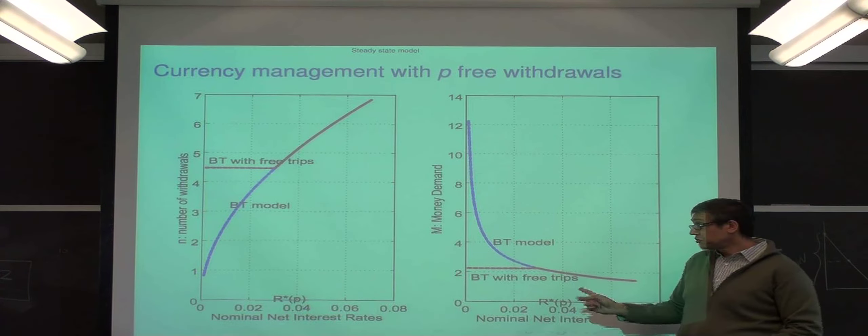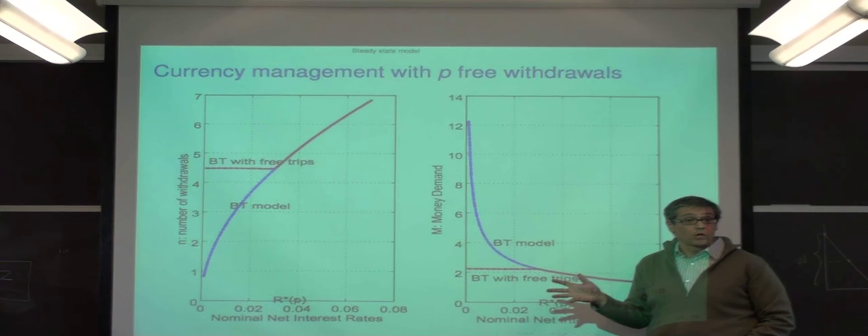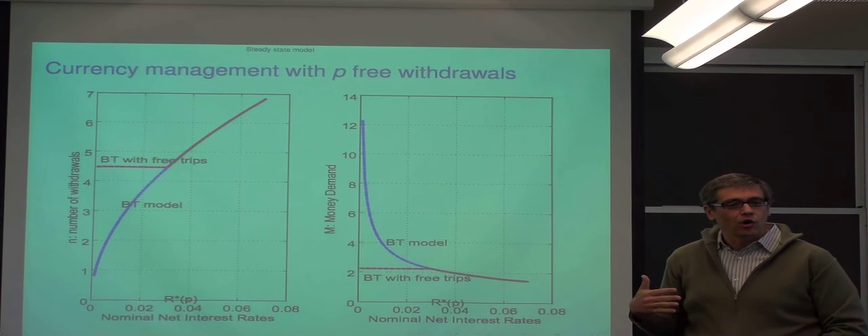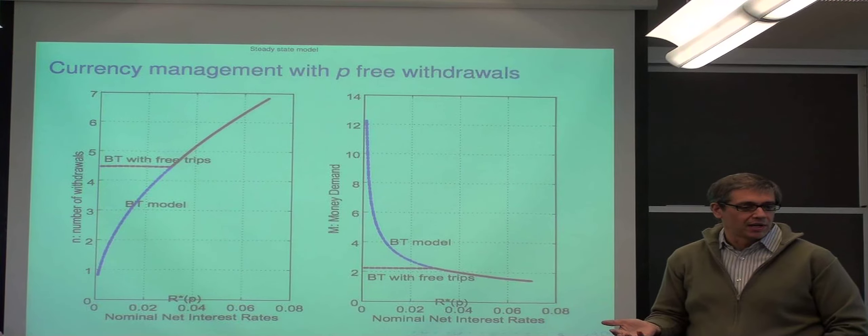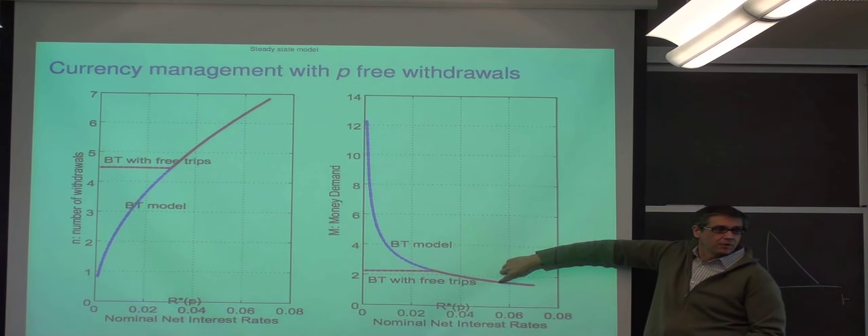Now, for those of you who know the predicts of money demand estimation, Baumol-Tobin says the elasticity is one-half. Estimated elasticity is typically very low. So there's a sense in which this model will give you low elasticities. And there's a sense in which also, when you think about velocity, people think that the elasticities are low because of the effect of technologies that allow you to withdraw money.